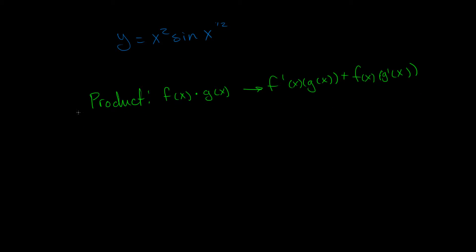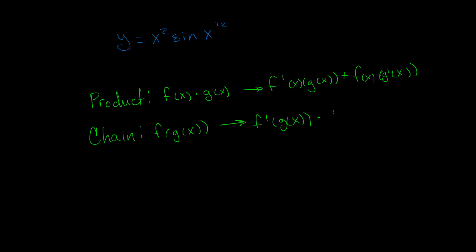The other rule we're going to use is the chain rule. The chain rule says that if we have f(g(x)) — a function of a function of x — the derivative is f'(g(x)) times g'(x). This means we take the derivative of the outside function f first, keep g(x) the same, and then multiply by the derivative of the inside function g.